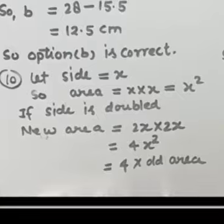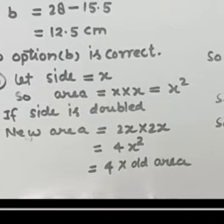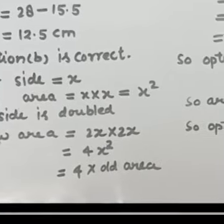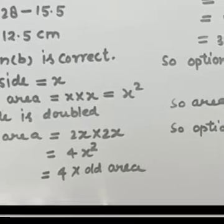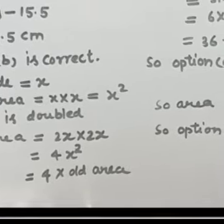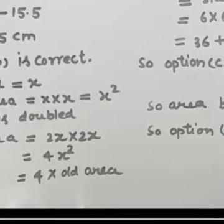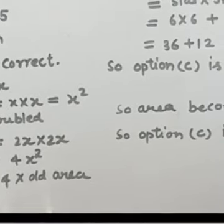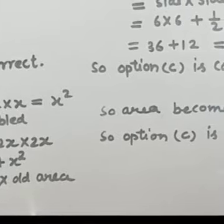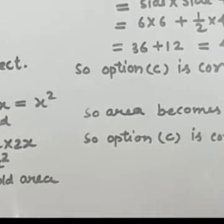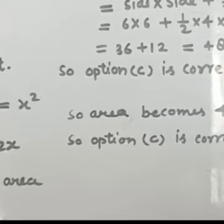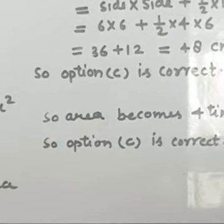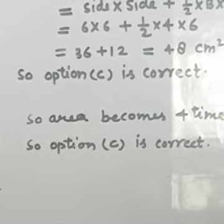Question number 10: if the side of a square is doubled, what will be its area? If original side is x, original area is x². After doubling, the new side is 2x, so new area is 2x × 2x = 4x². The area becomes 4 times the original area. Option C is correct.